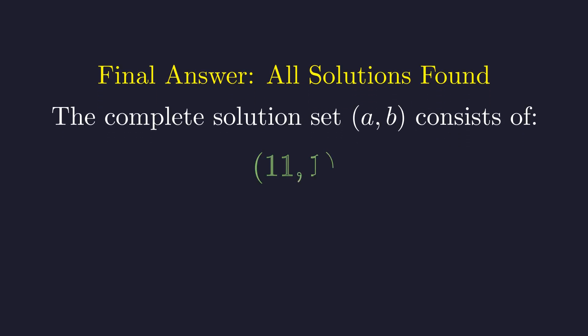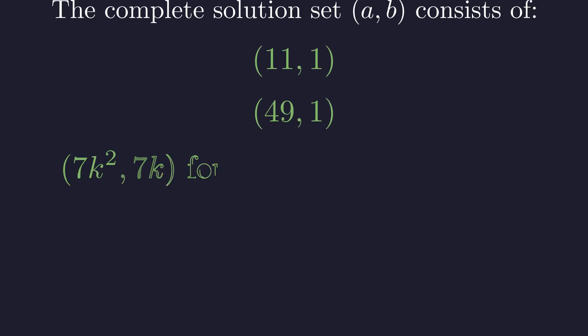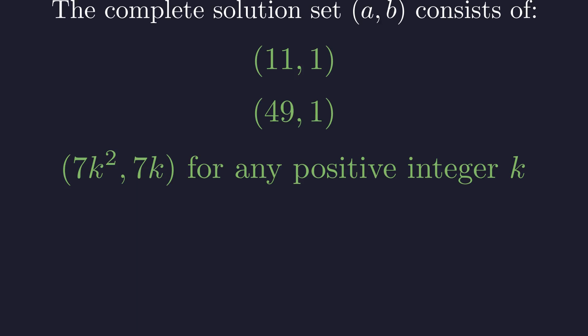The complete solution set consists of two isolated pairs and one infinite family. The first solution is the pair (11, 1). The second solution is the pair (49, 1). The third is the infinite family of pairs of the form (7k², 7k) for any positive integer k.